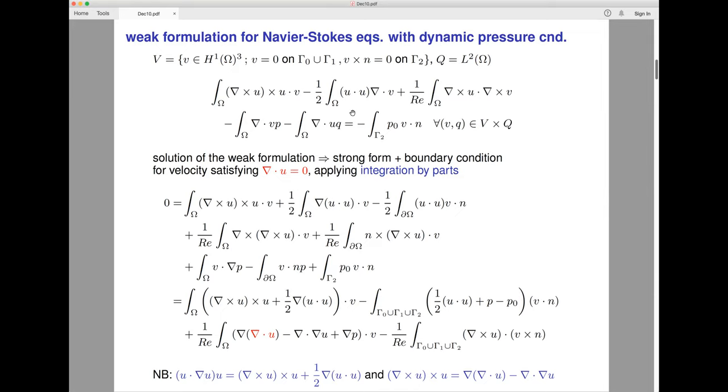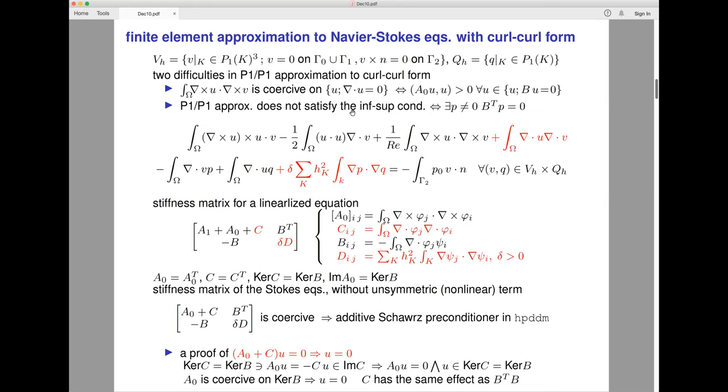I'd like to use P1 approximation for both velocity and pressure. There are two difficulties for this formulation. One is the curl-curl form is only coercive on divergence-free fields, so during factorization some problems happen. Also, it's well-known that P1-P1 approximation does not satisfy the inf-sup condition, so we have to do some stabilization.